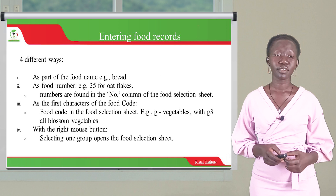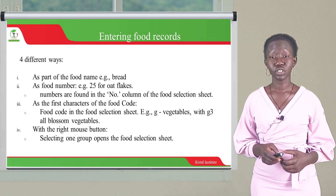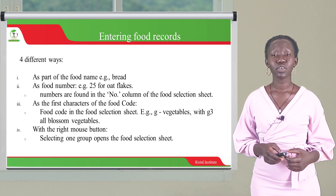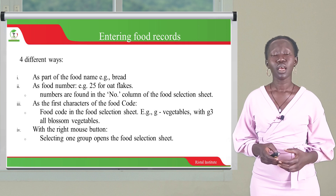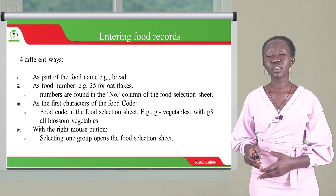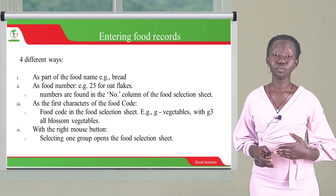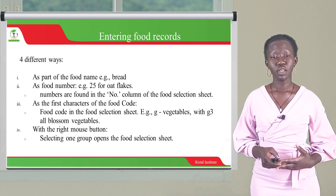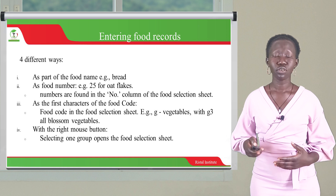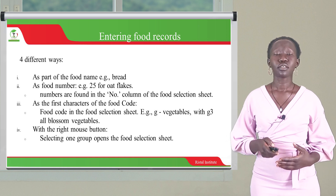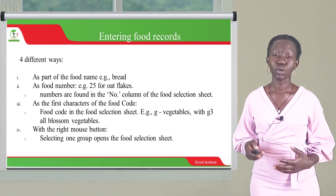The third way is by entering the first characters of the food code, which is found in the food selection sheet. For example, if you want to identify vegetables, they are denoted by the letter D. If you want to identify frozen vegetables under vegetables, you can go to G3 to find frozen vegetables. The fourth way is using the right mouse button — you can select manually using your mouse, select a group that opens up the selection sheet, and then choose what you want to work with.